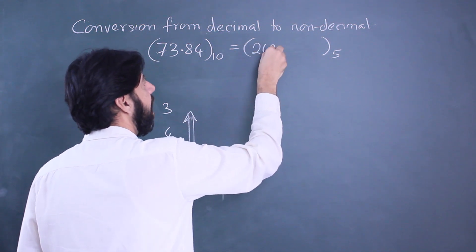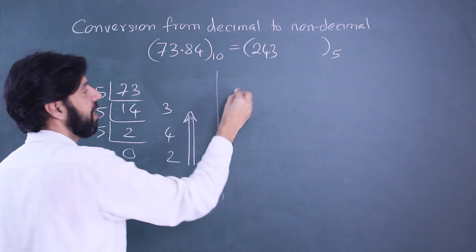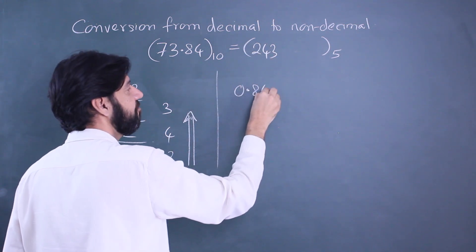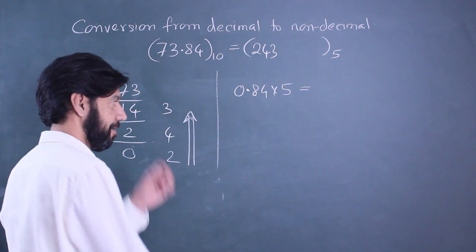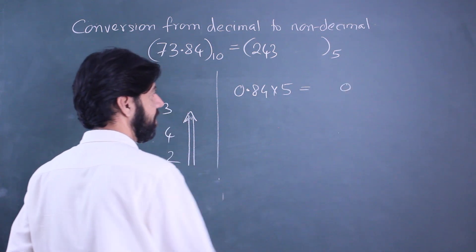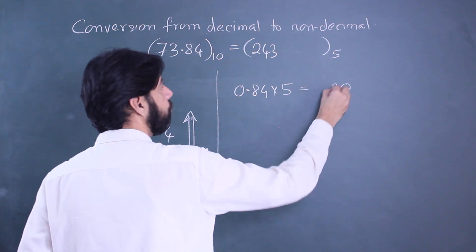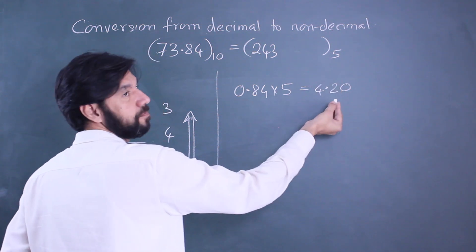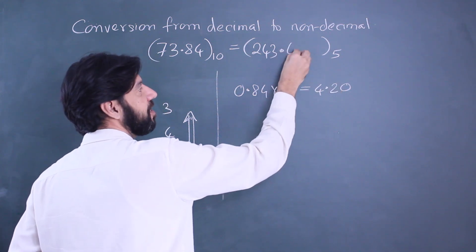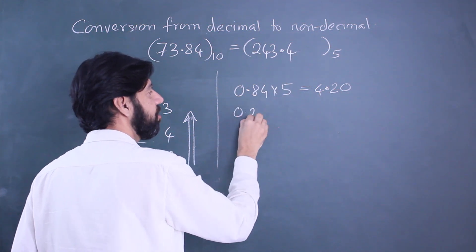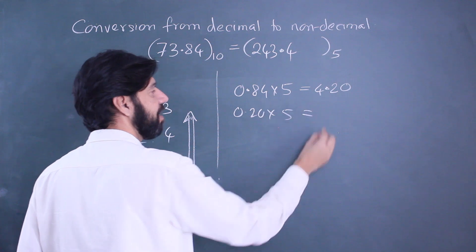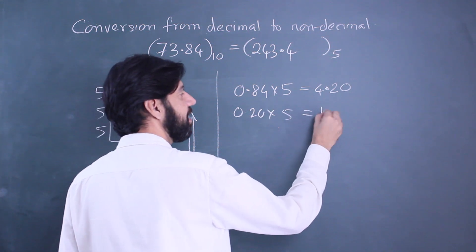For the decimal part, take 0.84, multiply it with 5. When I multiply it with 5 I get 4.2. So that 4 will be the first decimal place. Just take the decimal part 0.20 times 5, and when I do that I'll get 1.